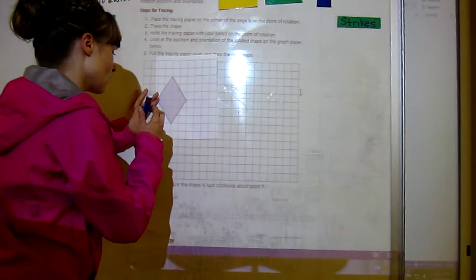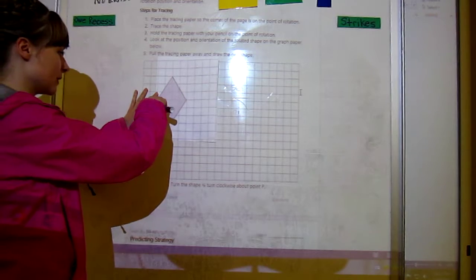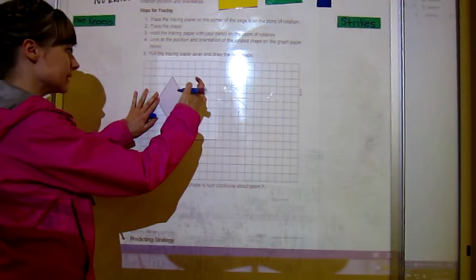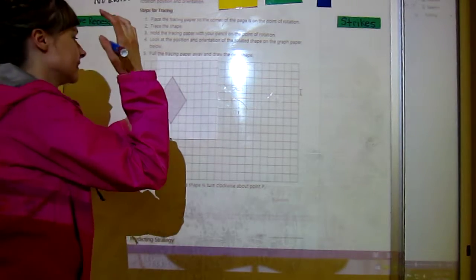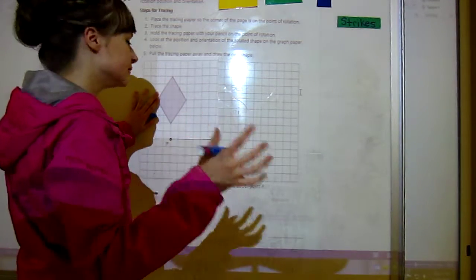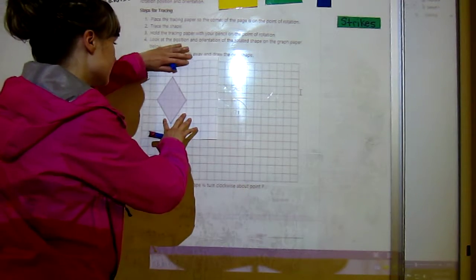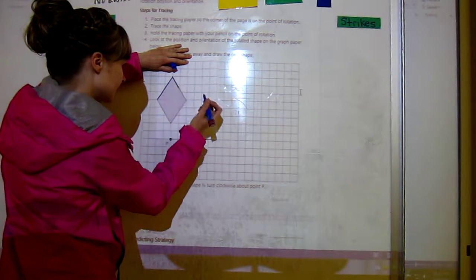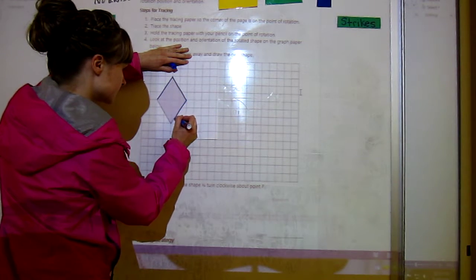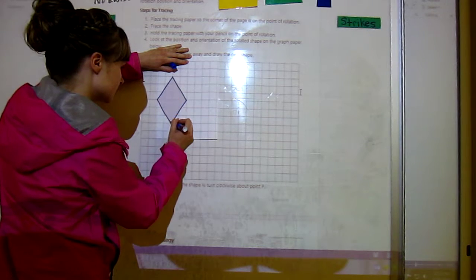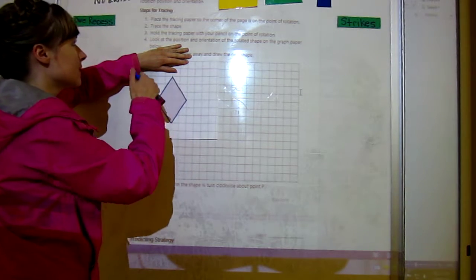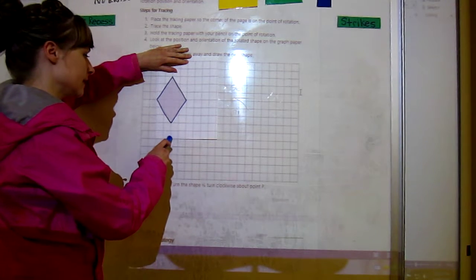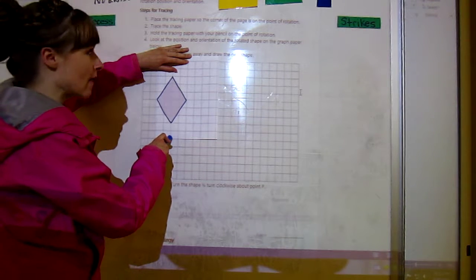That's okay. We'll just draw a dot to show where that point is. It's easier for me because I've got the image being projected onto my paper, but if you look closely you'll be able to see the line of your paper. So what we do is we draw our shape. Okay, so that is trace the shape. Now hold the tracing paper with your pencil on the point of rotation.